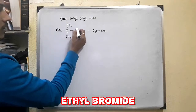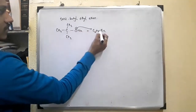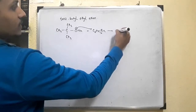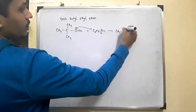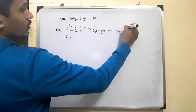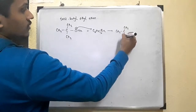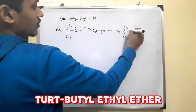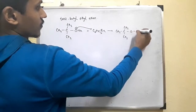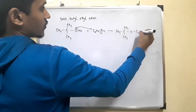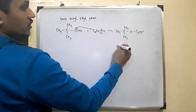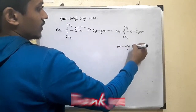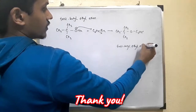If we want to prepare tertiary butyl ethyl ether, we should take sodium tertiary butoxide plus C2H5Br. The nucleophile attacks, the leaving group leaves, and finally we get the product — tertiary butyl ethyl ether.